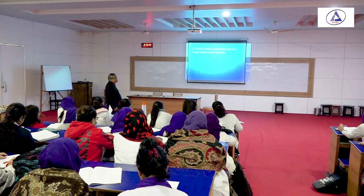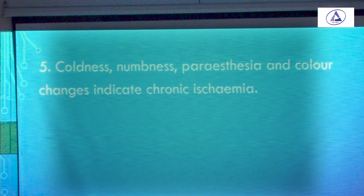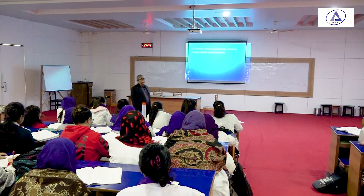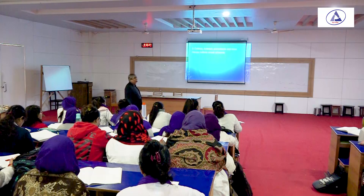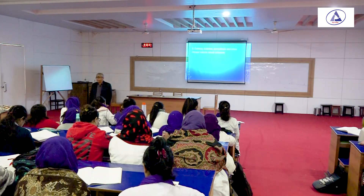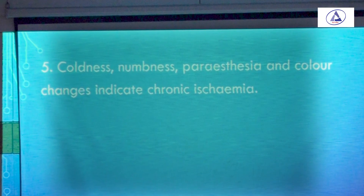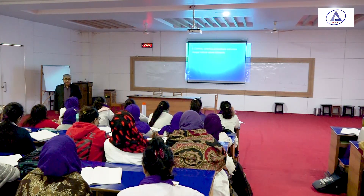The fifth group of symptoms is coldness, numbness, paresthesia, and color changes, which indicate chronic ischemia. Patients with Buerger's disease present with these complaints — they feel coldness in the distal portion of the limbs, numbness, paresthesia, and color changes such as blackening. When there is acute ischemia there is severe pain, while chronic ischemia produces these gradual changes.